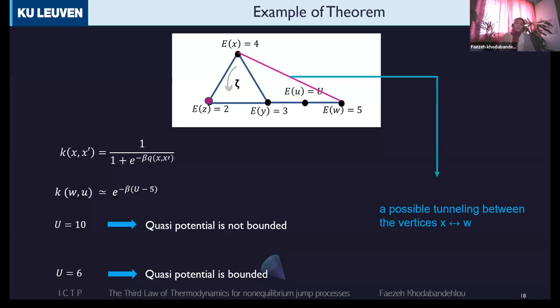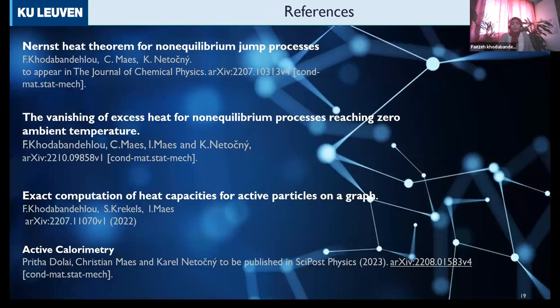So the third law of thermodynamic in non-equilibrium has two conditions. And under these two conditions, the heat capacity is going to zero. The first condition is that in the low temperature, you need only one dominant state. And the second thing is speaking about the accessibility. If all of the states are enough accessible to each other, then you will be sure that heat capacity is going to zero.